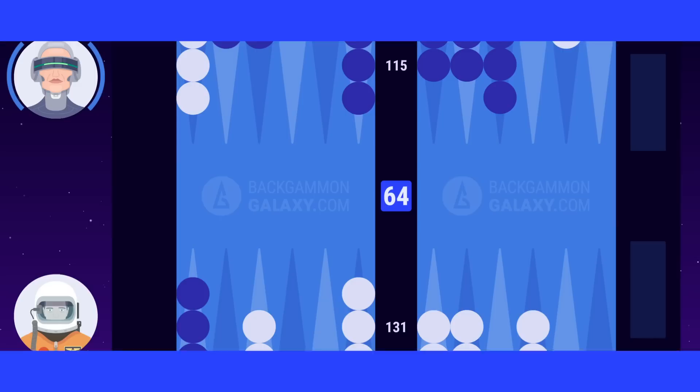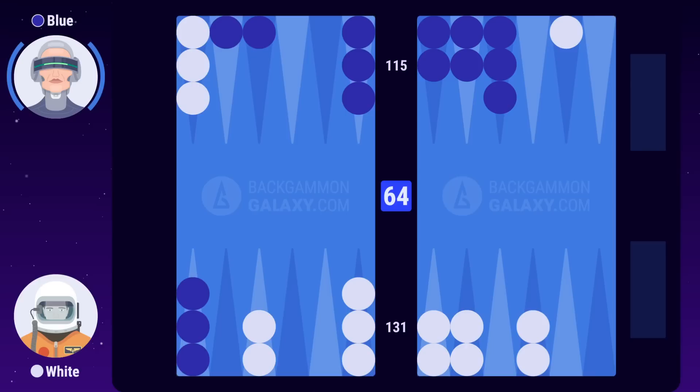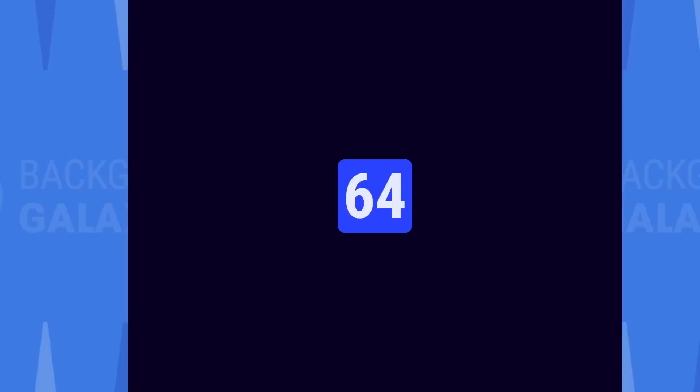Section 8. Doubling Cube. The game has now reached a point where blue has an advantage over white. She's ahead in the race, as you can tell by the lower pip count, and she's trapped white behind a prime. When you have an advantage in the game, you usually want to double your opponent.